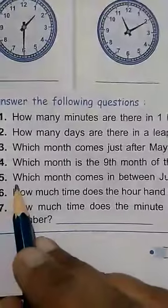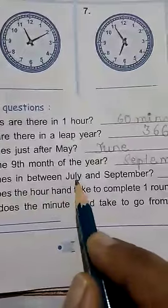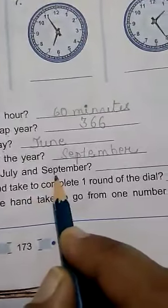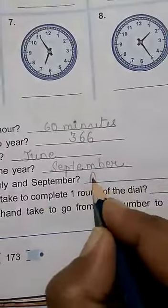Then, fifth question, which month comes in between July and September? The month is August. You will write here August.